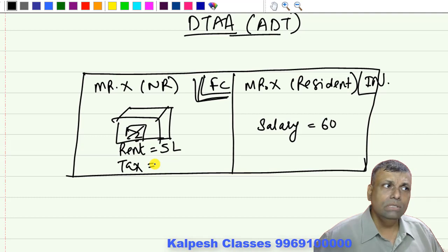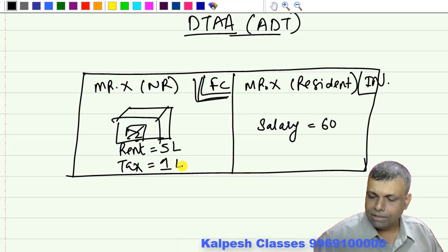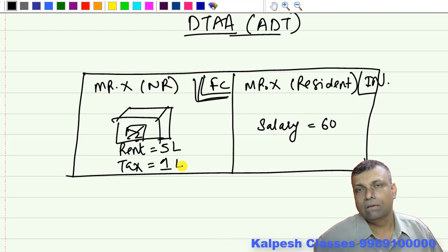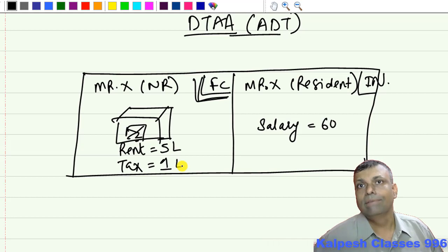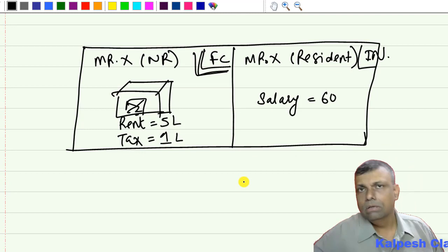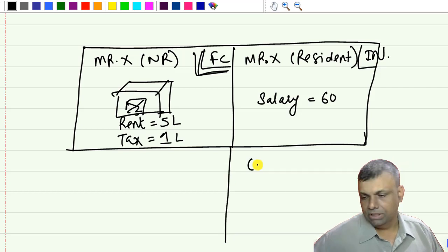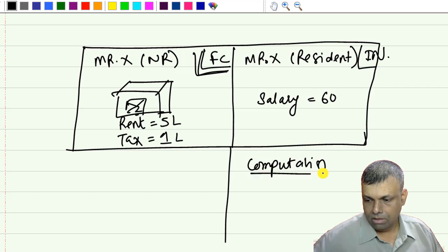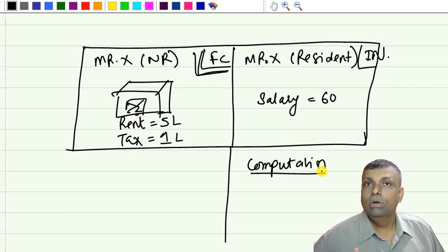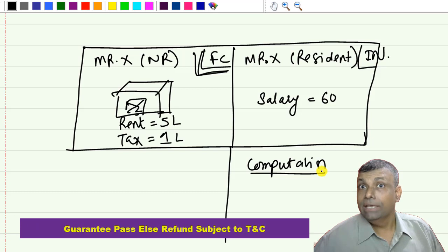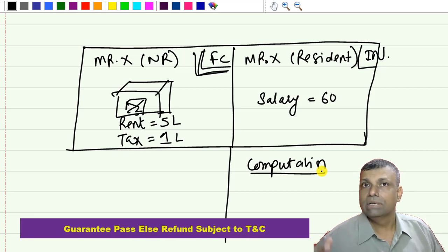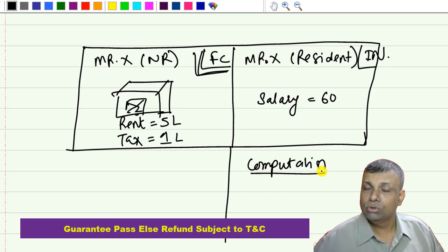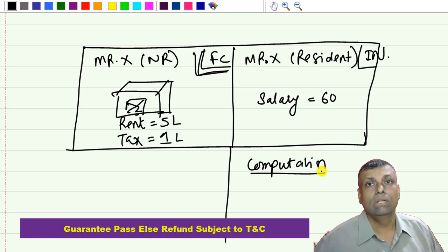Say for example there is a tax of rupees 1 lakh on this property income, which you have paid in that particular foreign country because that income is occurring in that country. Now imagine a situation where because you have income in India, you are going to do the computation in India. Being resident in India, you are going to be globally liable - that means whether you have Indian income or foreign income, both are taxable.